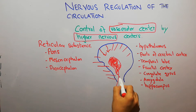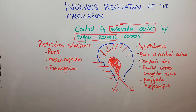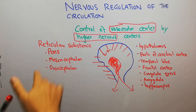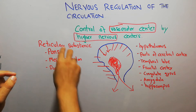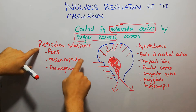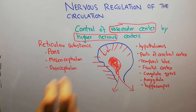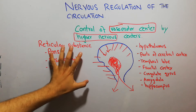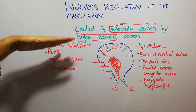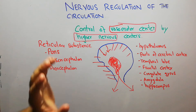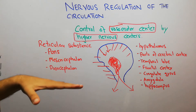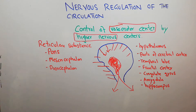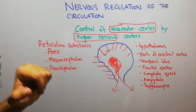The vasomotor center influences the tone of blood vessels and helps in increasing or decreasing the mean arterial pressure and heart rate. Notably, the superior parts of the reticular substance increase the tone of the vasomotor center, while the lower areas of the reticular substance decrease the tone or activity of the vasomotor center.